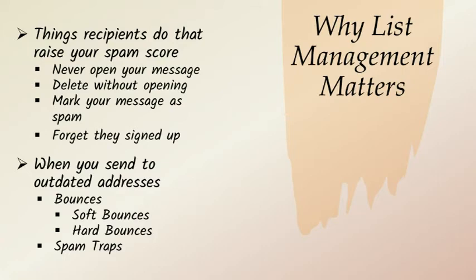A hard bounce is when a message can't be delivered, most commonly because the address doesn't exist — you'll get a message saying this email can't be delivered. Remove that address from your list immediately. A hard bounce will hurt your reputation, but more importantly, sometimes mail providers take those no-longer-existent addresses and turn them into what are called spam traps. They set them out there to see who will keep emailing to them, and they report those senders as spammers without sending a bounce message. Outdated addresses will always hurt your reputation.